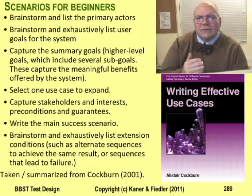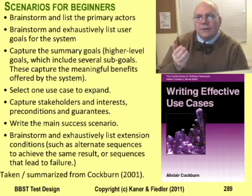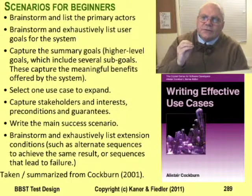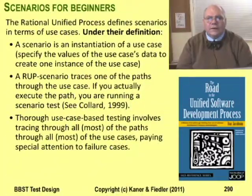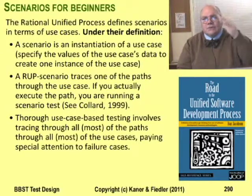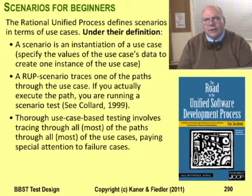Alistair Cockburn's book presents an excellent set of guidelines for writing use cases. He gives lots of examples and presents a detailed process for creating a full set of use cases for a program. In Cockburn's terms, creating the presentation is a summary goal, creating the slides are sub-goals, and importing the picture is a sub-sub-goal. Now imagine creating a test for importing pictures into slides. To do this, you have to decide on a specific slide and a place on the slide where you're going to put the picture, and a specific picture whose file is located in a specific place on the disk. Filling in the specifics to get from a test idea to the actual test is called instantiating the use case. In the terminology of the Rational Unified Framework, an instantiated use case is a scenario, and if you test the scenario, you've run a scenario test.